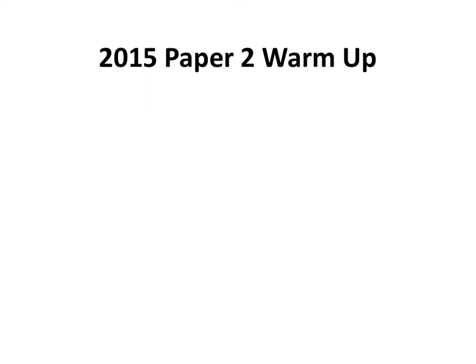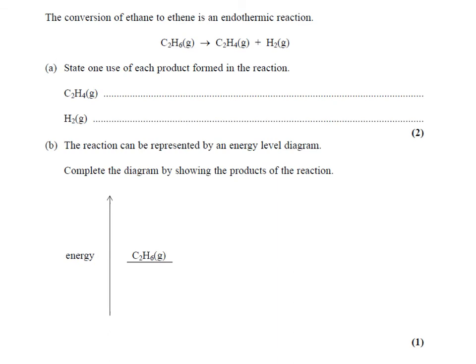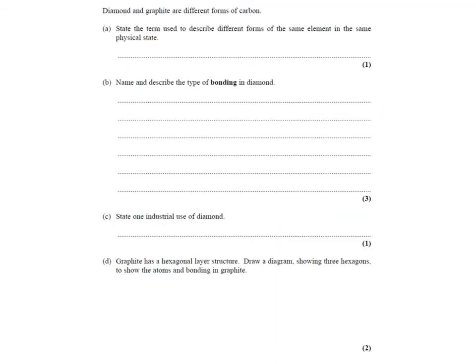Right, second part of the 2015 warm-up video. Let's scroll through where we got to last. We didn't get that far, we got here. So this is a question on different forms of carbon, diamond and graphite. The first question is, state the term used to describe different forms of the same element in the same physical state. That word is allotrope.